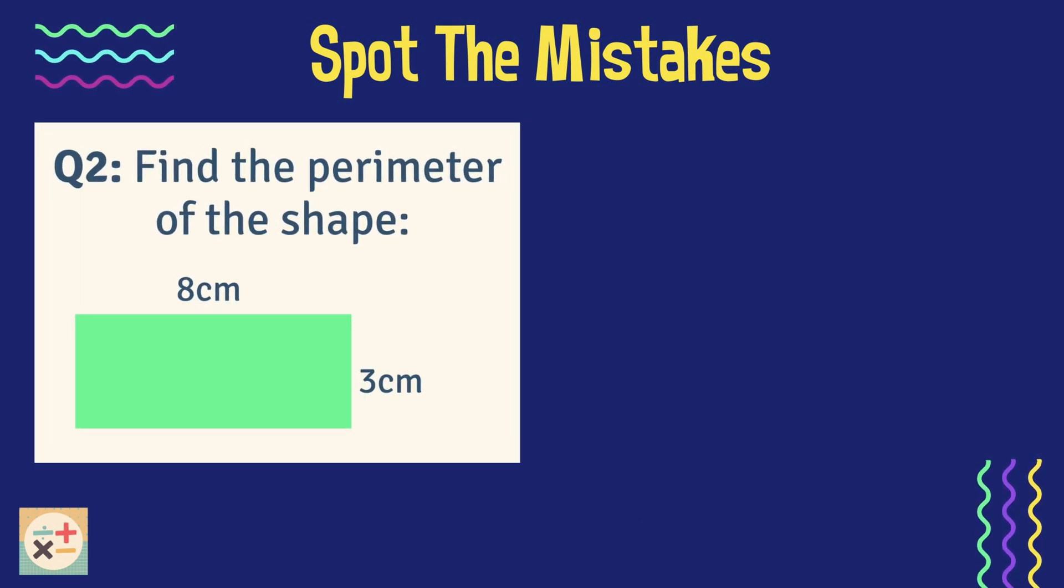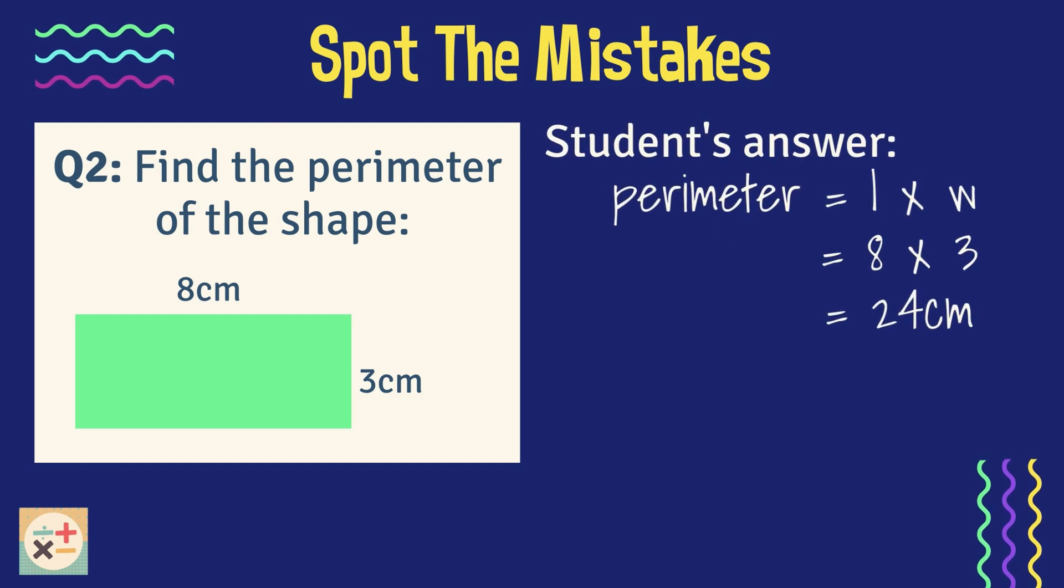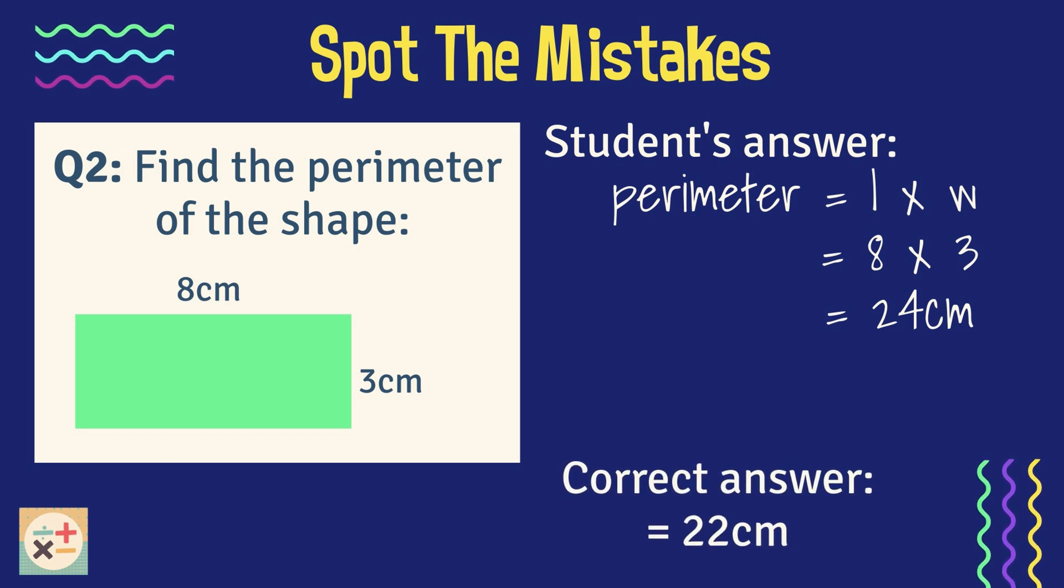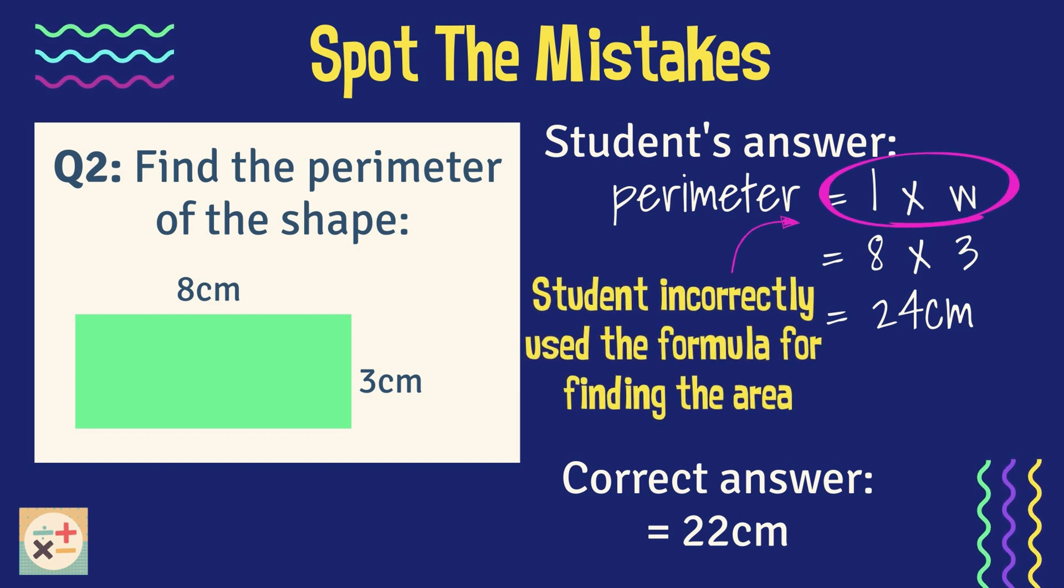Question 2. The student has been given a rectangle with measurements and asked to find the perimeter. See if you can spot the mistake in the student's workings out. Here is the correct answer for your reference. Here, the student has incorrectly used the formula for finding the area, multiplying the length by the width, instead of adding up the distance around the edge of the shape to find the perimeter.